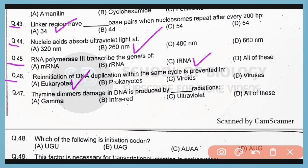Question number 47. Thymine dimer damage in DNA is produced by which radiation? So correct answer is option C. Ultraviolet radiations are responsible for thymine dimer formation in DNA.